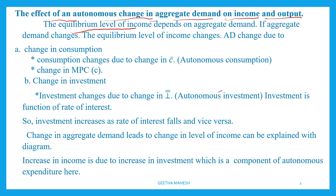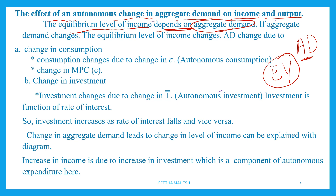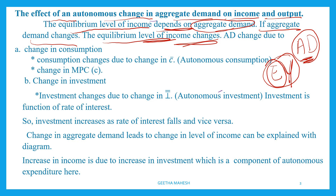The equilibrium level of income depends on aggregate demand. The equilibrium income of a nation always depends on the total demand or aggregate demand in the economy. If aggregate demand changes, then the equilibrium level of income also changes. When aggregate demand increases, the equilibrium level of income of the economy is going to increase.